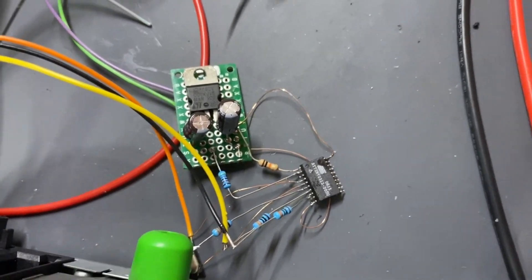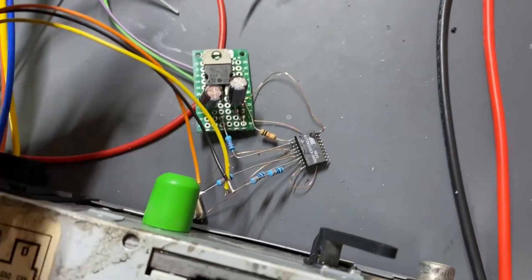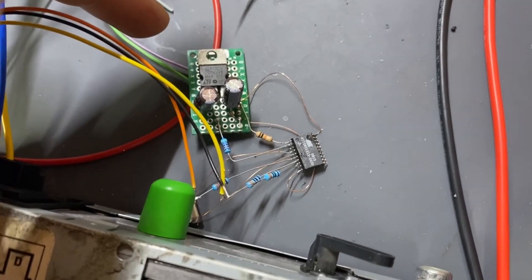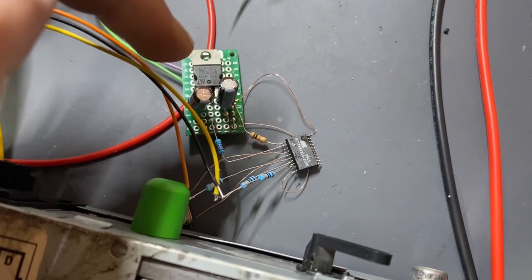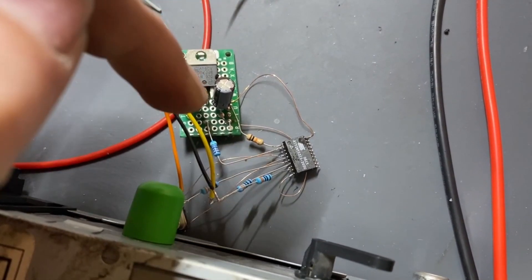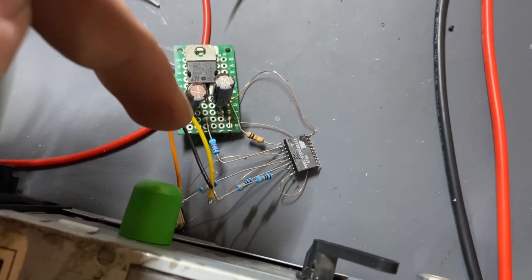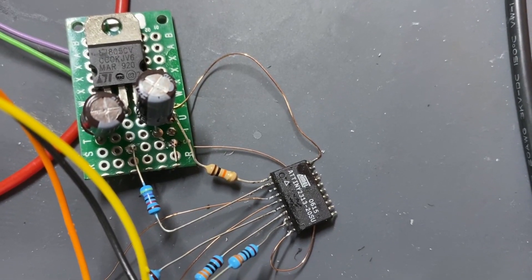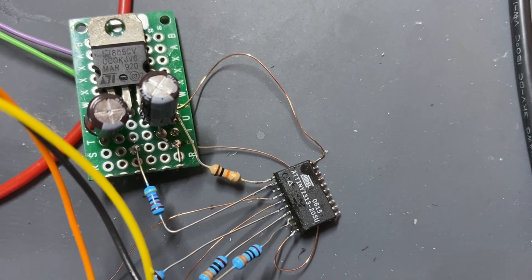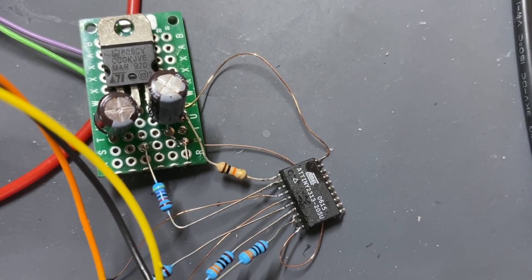So it's a simple circuit. You have a 7005, you have two capacitors and five resistors with different values, one oscillator, and an ATMEL ATTINY-2313.